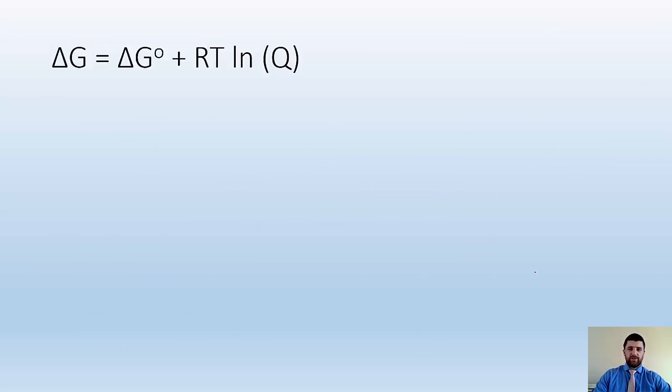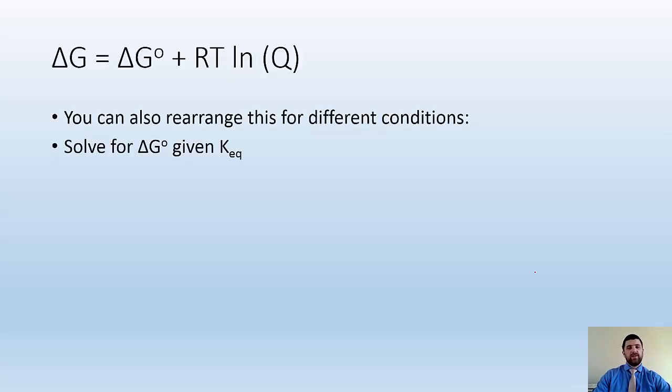So this equation, some more things. You can also rearrange this for different conditions. Let's say we wanted to solve for delta G0, and we were given the KEQ. Well, if it's the KEQ, that tells me at equilibrium, delta G is 0. So I have 0 here, and I can now rearrange things to solve for delta G0.